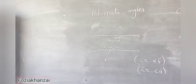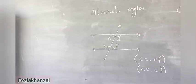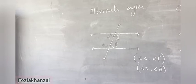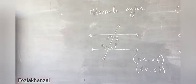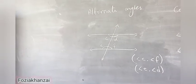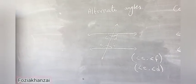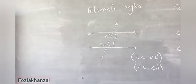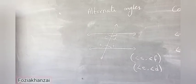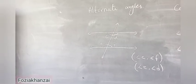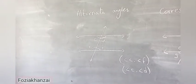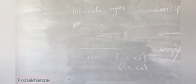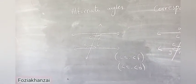Now the next heading: alternate angles. We draw the same figure — two parallel lines, then a third intersecting line that cuts or intersects the parallel lines. Alternate angles are those angles which lie on the opposite sides of the transversal line.